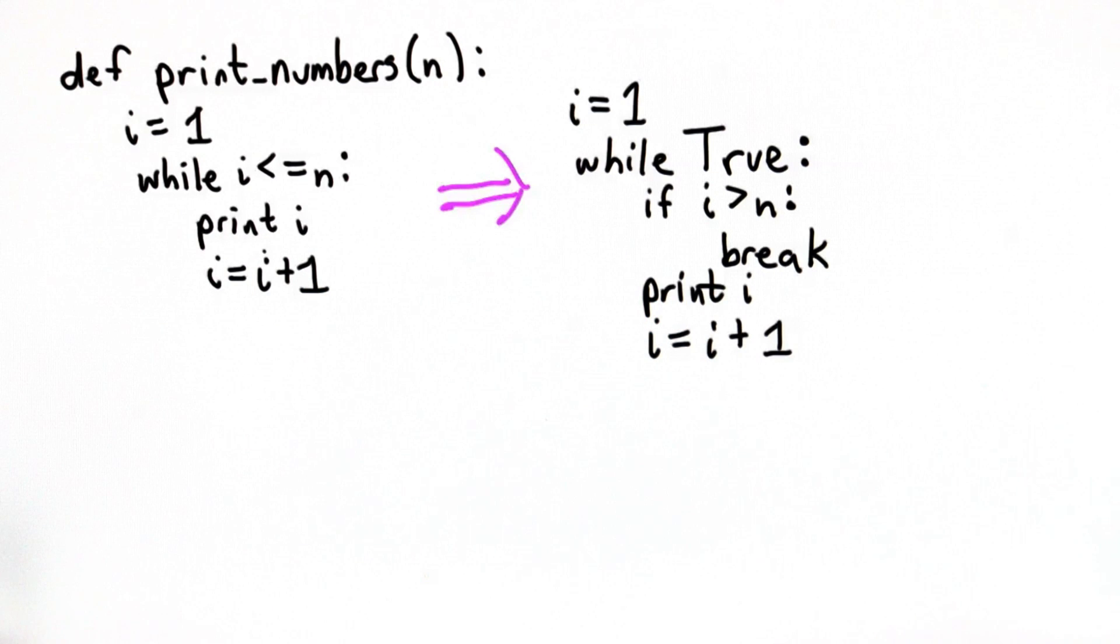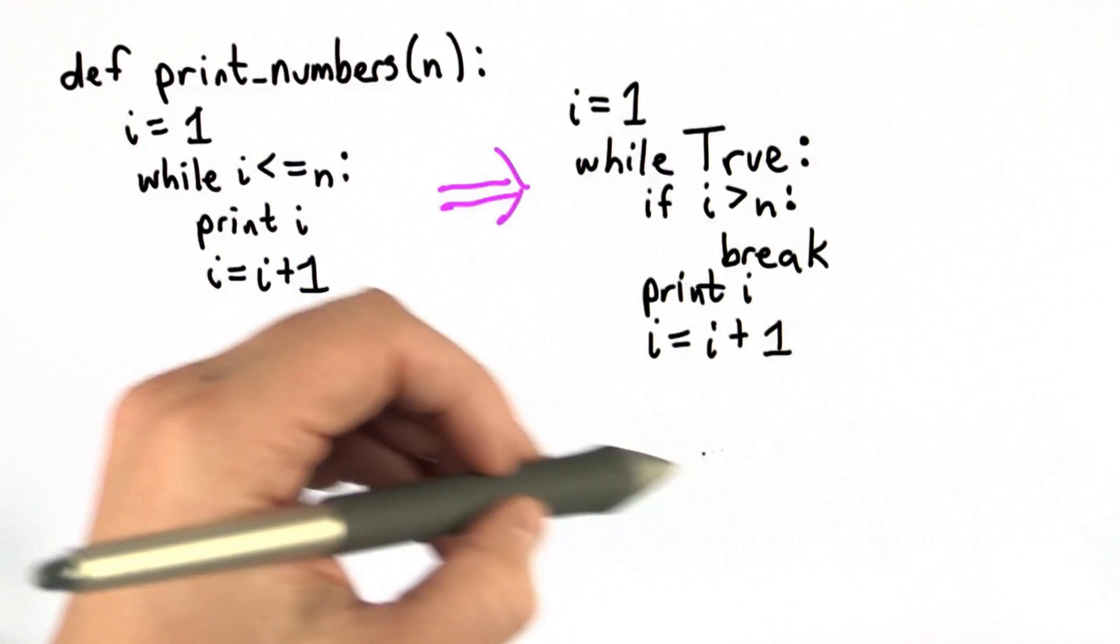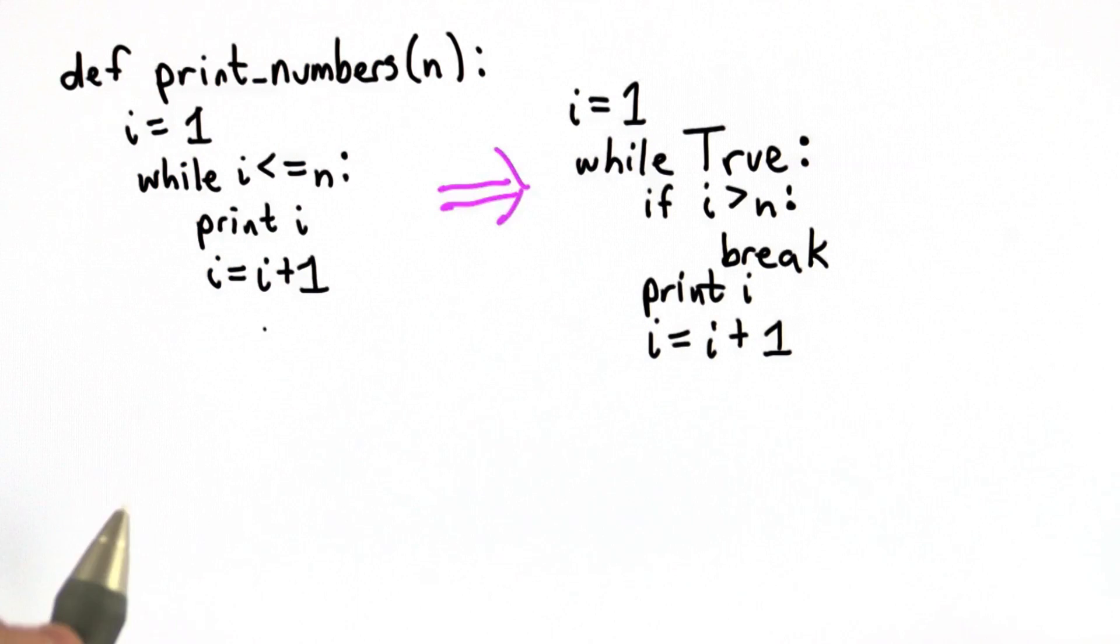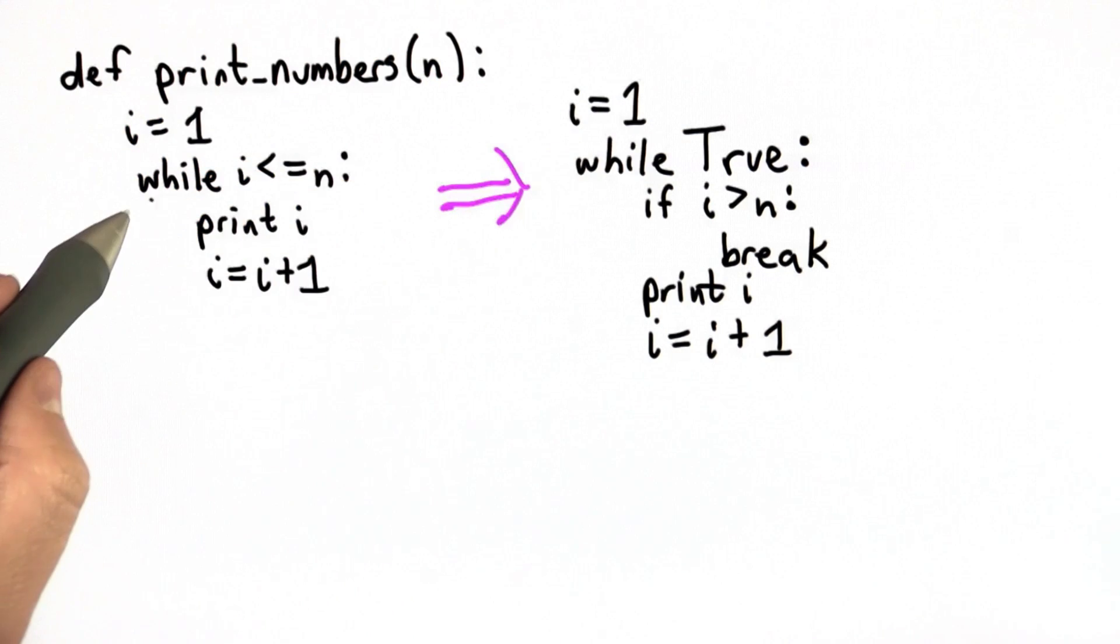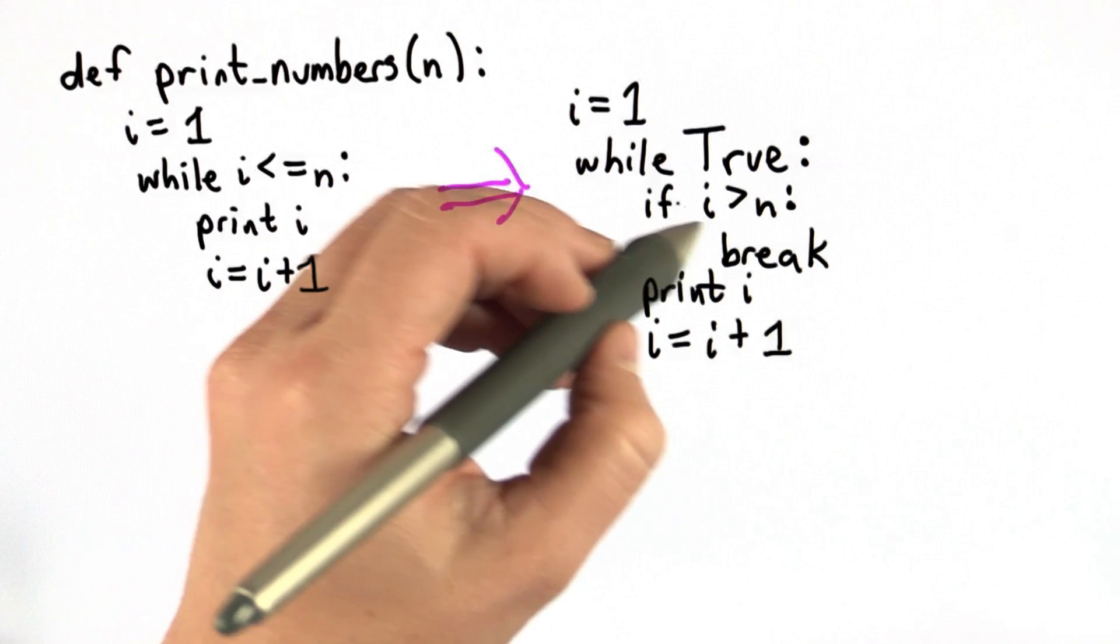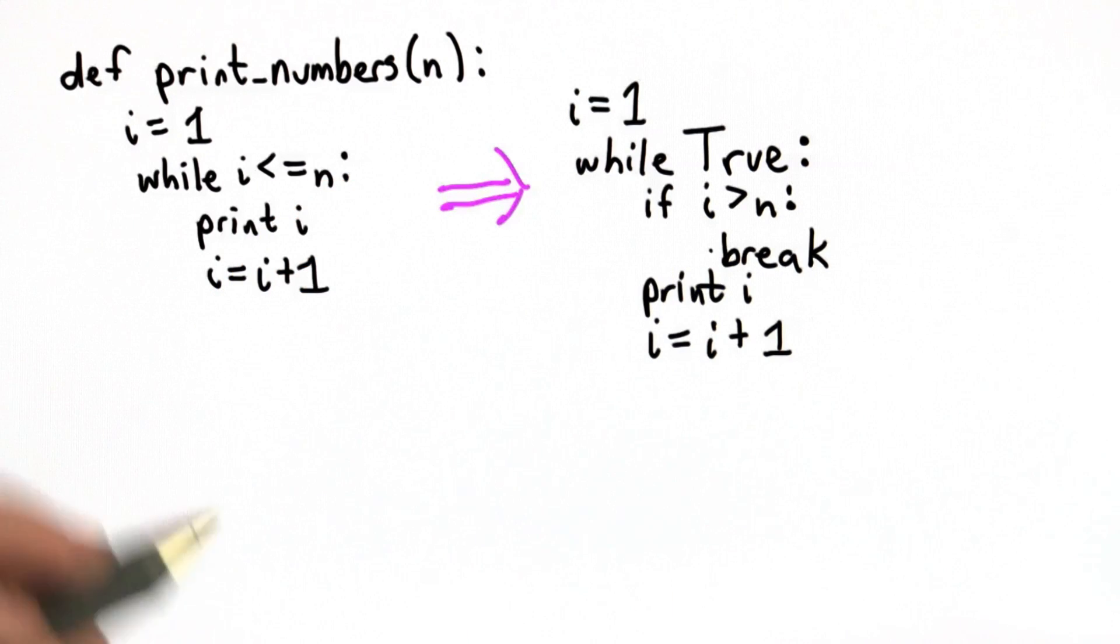This loop has exactly the same meaning as the one we had before. The previous one's better in every way. This is more complex, more code. This illustrates how we can use break, but we wouldn't want to do it this way. We want to keep our code simple and easy to understand. We'll see once we get to extracting all the links on the page that there are cases where it's easier to write the code using break.